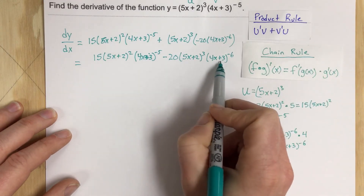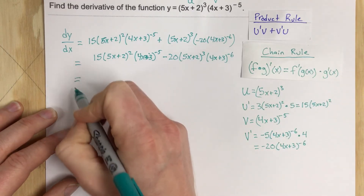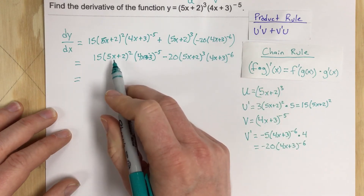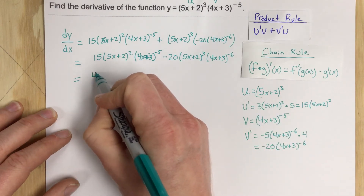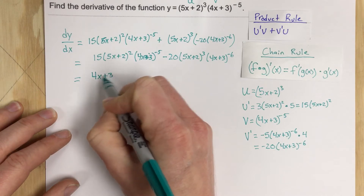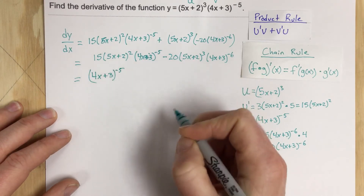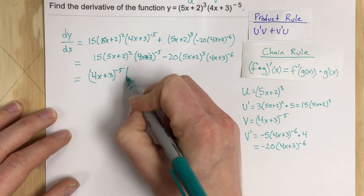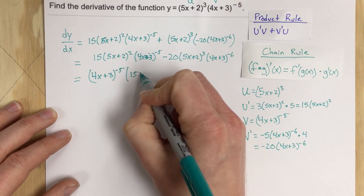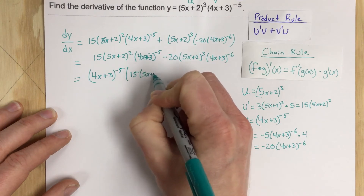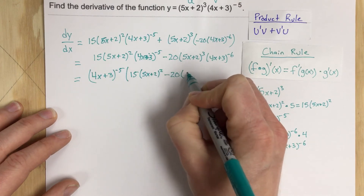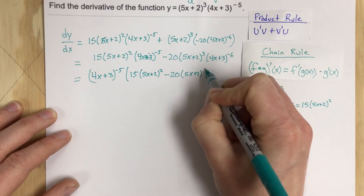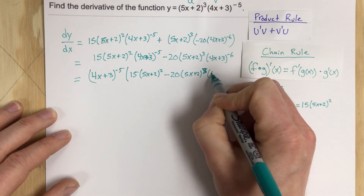I'm going to factor out 4x plus 3 to the negative 5 from both terms. When I factor that out, I'm left with 4x plus 3 to the negative 5, times the quantity: 15 times 5x plus 2 squared, minus 20 times 5x plus 2 cubed, times 4x plus 3 to the negative 1.